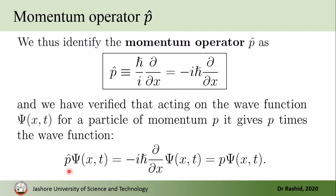Therefore, when the momentum operator acts on the wave function ψ, we have the momentum times ψ. We call this ψ an eigenstate of definite momentum.